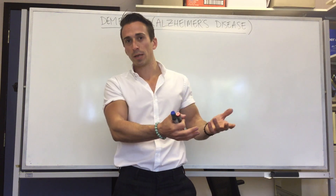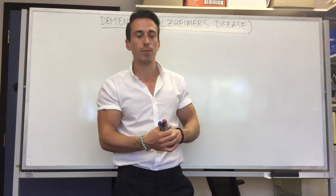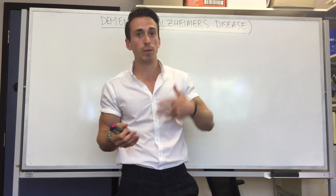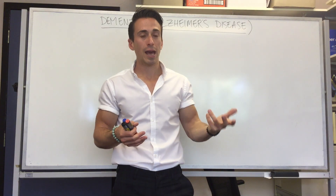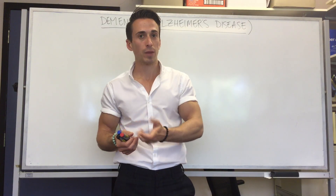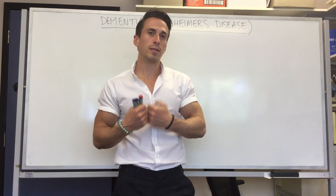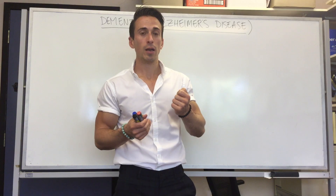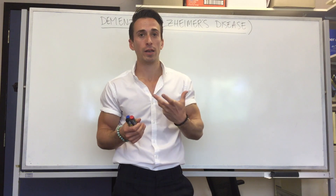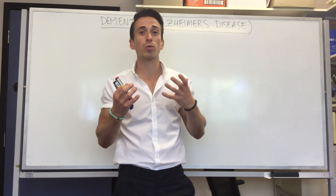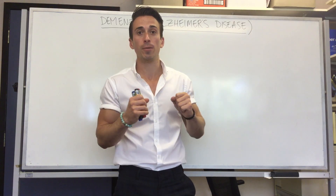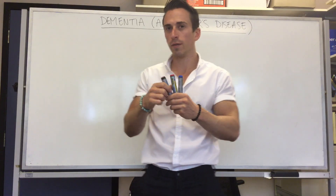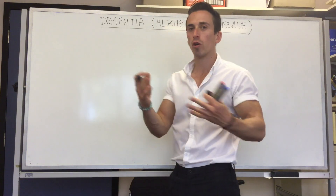Like dementia broadly, Alzheimer's is a progressive neurodegenerative disease associated with impaired cortical function and impaired cognitive skills. In Alzheimer's disease specifically, this is associated with neuronal loss — actual dying off or atrophy of neurons — resulting overall in a smaller brain with reduced neuronal mass.